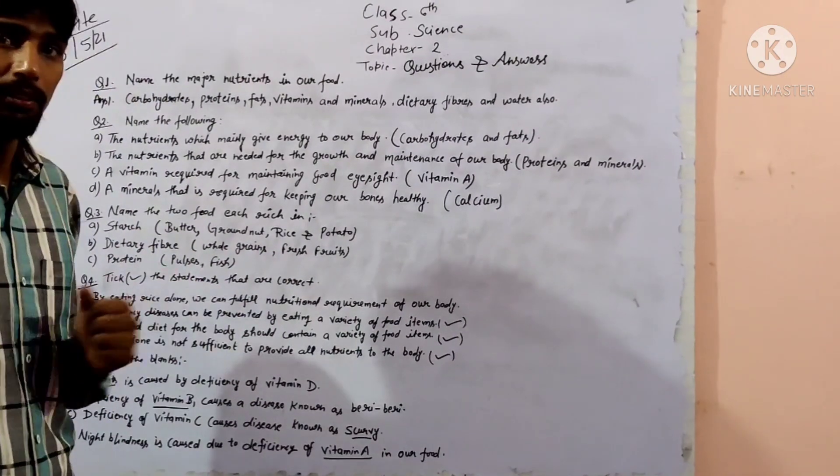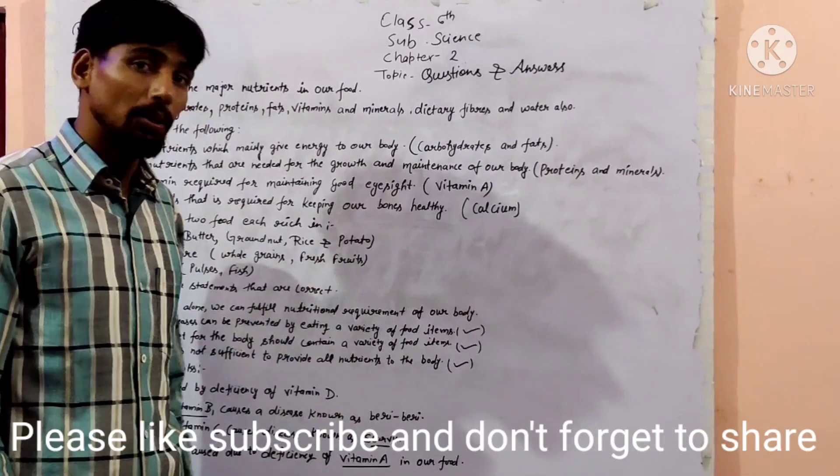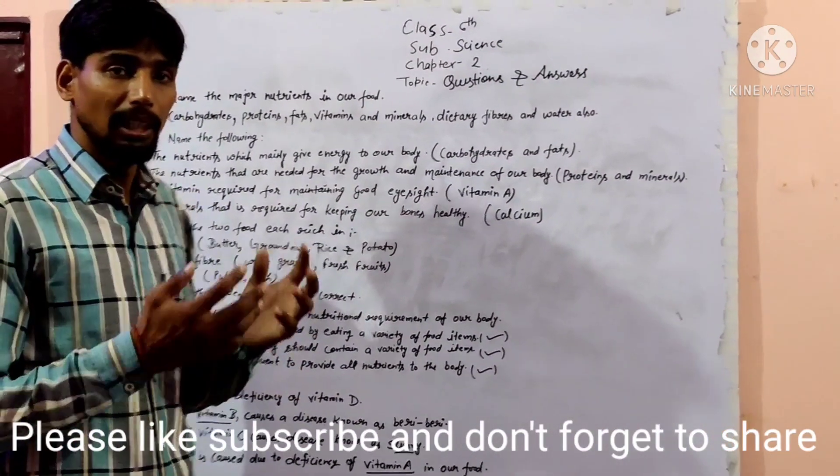First, starch. Starch rich food is written as butter, ground meat, rice and potatoes. Starch rich foods.